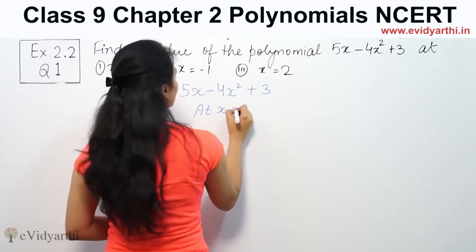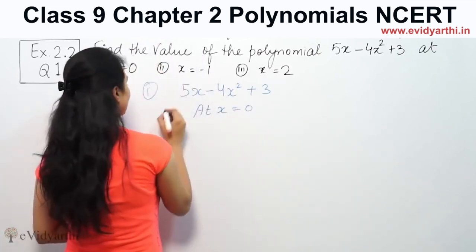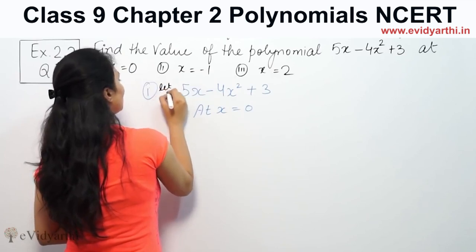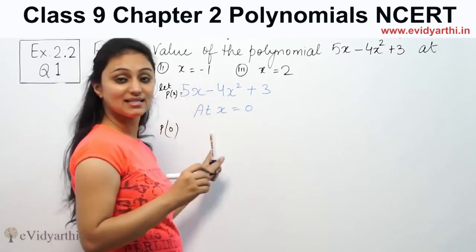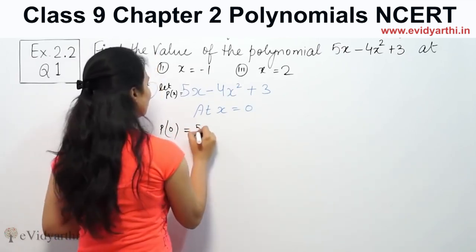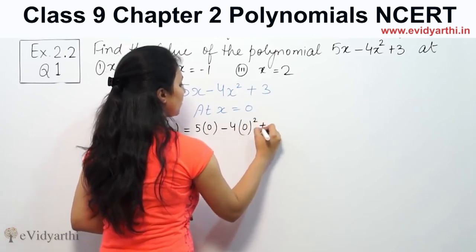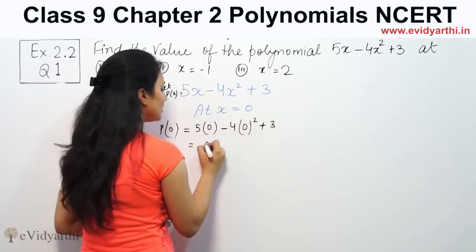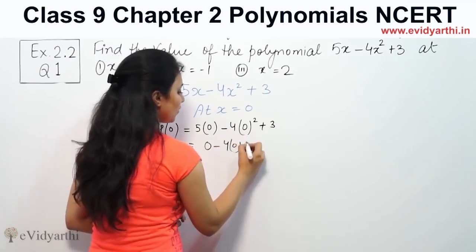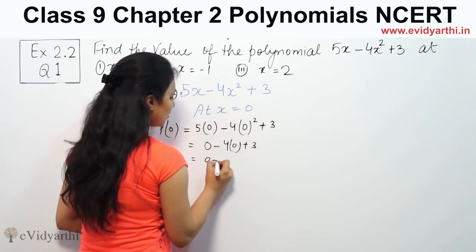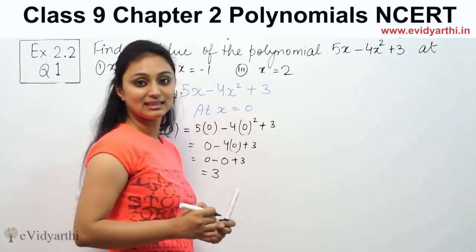For this polynomial 5x minus 4x² plus 3, find p(0). So this will be 5(0) minus 4(0)² plus 3. 5 into 0 will be 0, 4(0)² is 0 plus 3, so 0 minus 0 plus 3. The answer is 3.